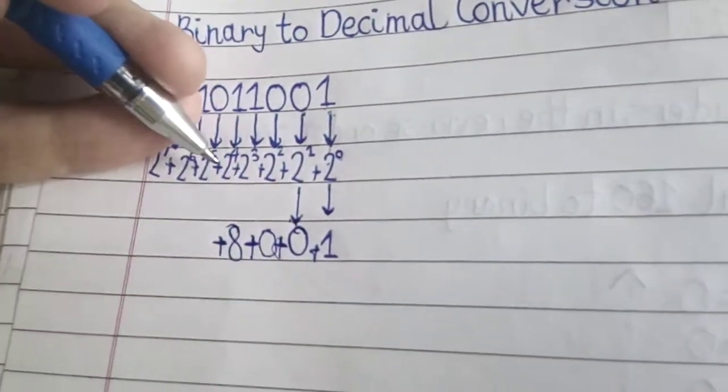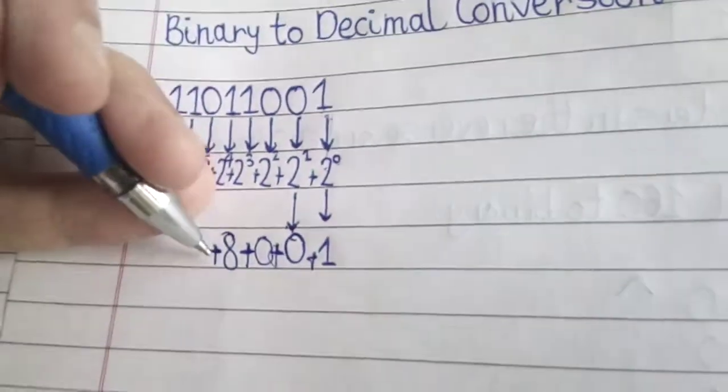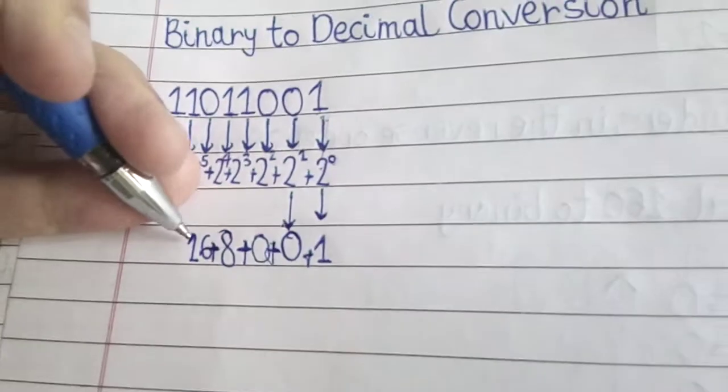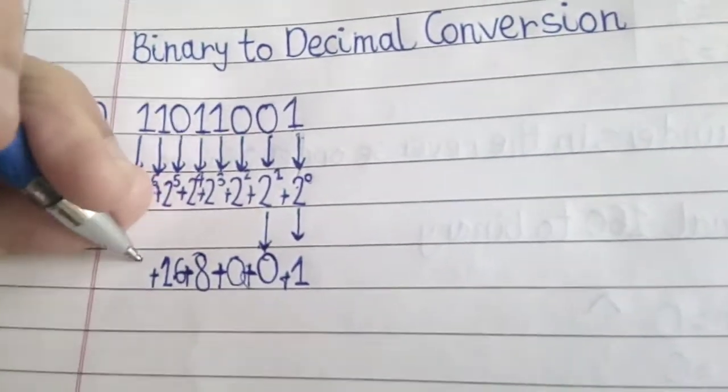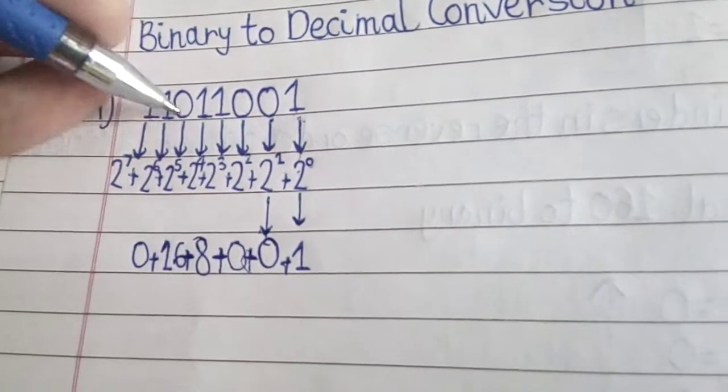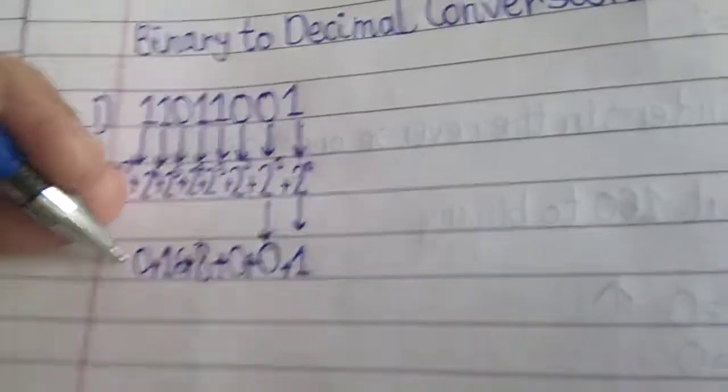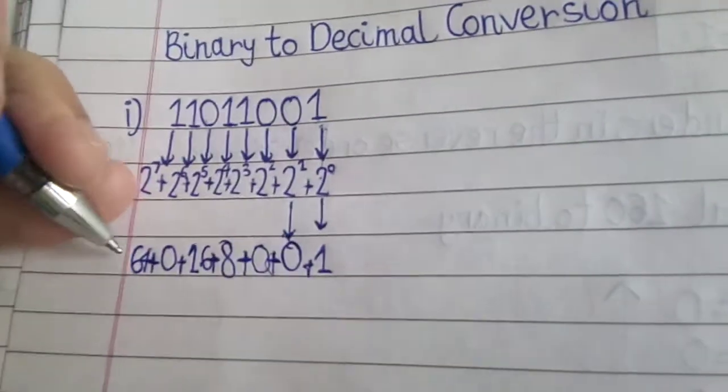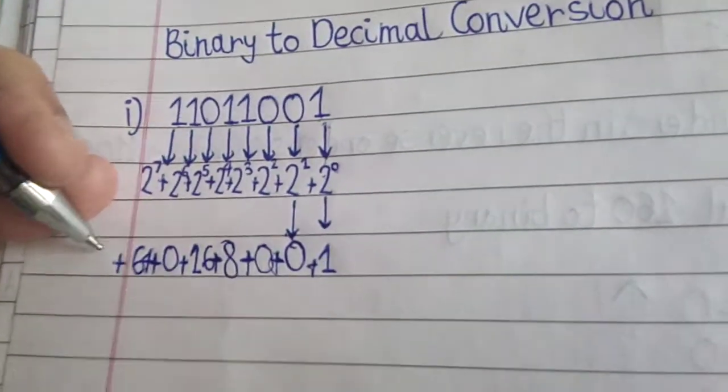Plus, 2 raise to 4 into 1 is 16. Then, plus 0 into 2 raise to 5 is 0. Plus, 2 raise to 6 into 1 is 64. And then, plus 2 raise to 7 is 128.